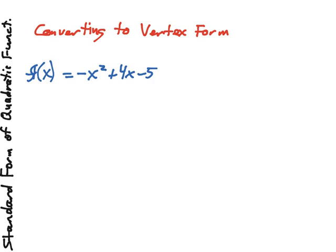We're going to go through and convert this into a vertex form equation. Now, just setting up the vertex form is f of x equals a times x minus h squared plus k.